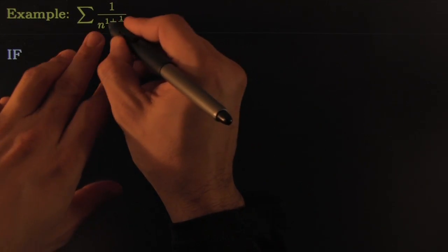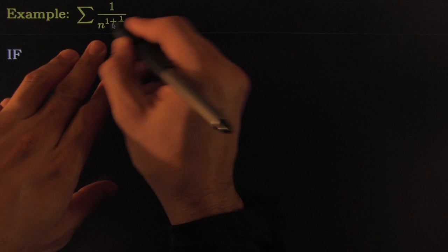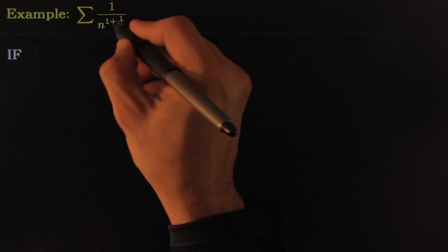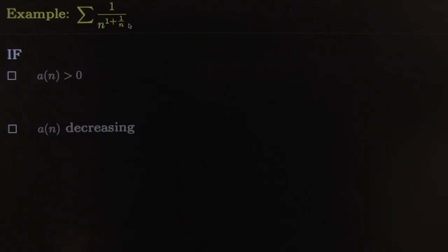Let's check out this example. You've got 1 over n raised to some power that's a little bit bigger than one, but not quite that much because this exponent is going towards zero. We'll quickly check the condensation conditions.